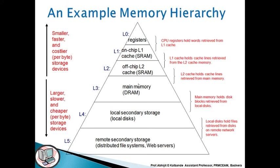At level 3 (L3), there is the main memory, which is dynamic RAM. The L2 cache holds cache lines retrieved from main memory. At level 4 (L4) is local secondary storage — the local disk — and the main memory holds disk blocks retrieved from the local disk. Level 5 (L5) is remote secondary storage, such as distributed file systems and web servers. The local disk holds files retrieved from the remote network server.